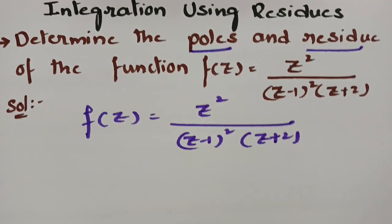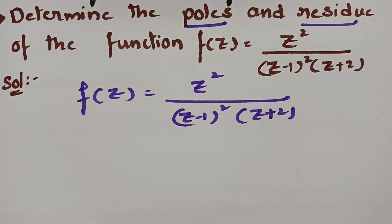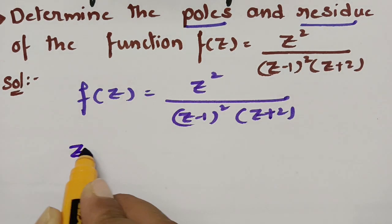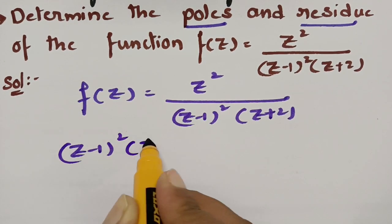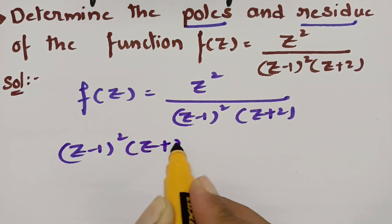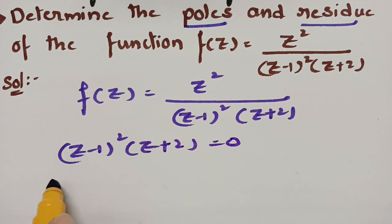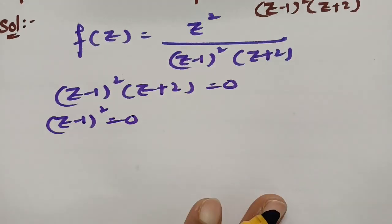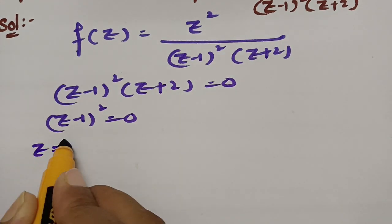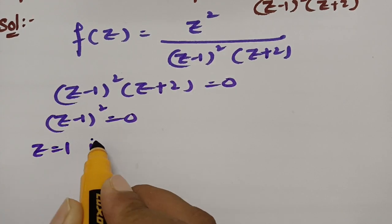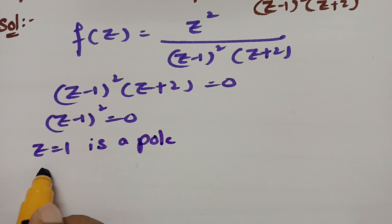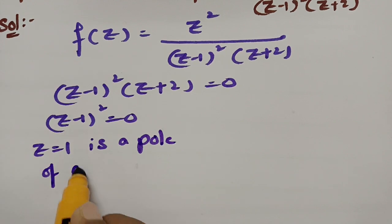In order to find the poles of the given function, we have to equate the denominator to 0. So, (z−1)²(z+2) = 0. If I equate (z−1)² to 0, we get z = 1, which is a pole of order 2.